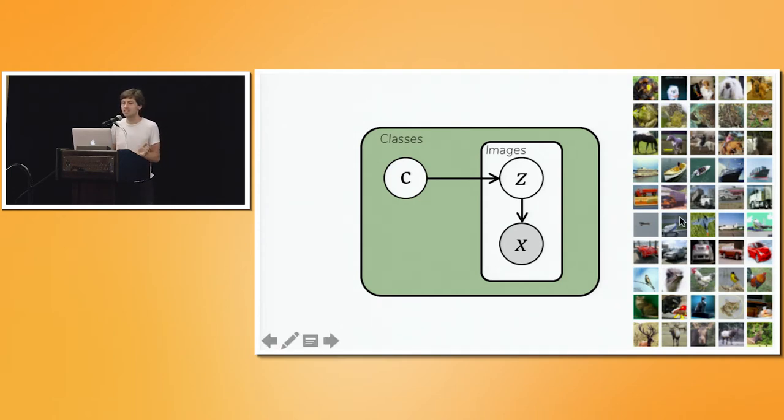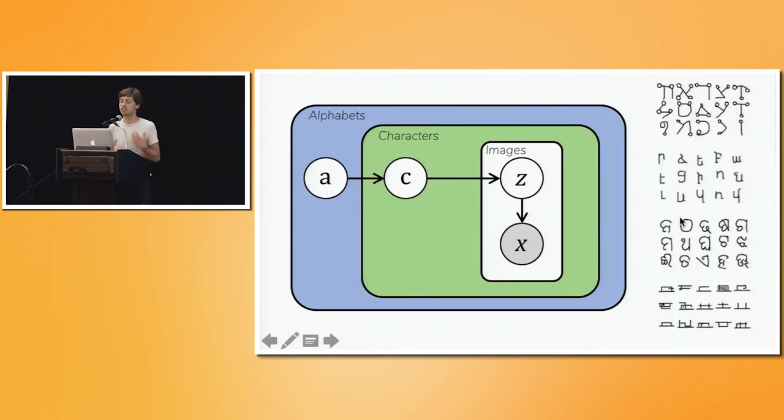Of course, there are many more. Some data sets have a nested class structure. So for example, I'm sure many of you have seen the Omniglot data set. It's a data set of handwritten characters, and it's organized into 50 alphabets where each alphabet has something like 30 characters, and each character has 20 images. So we'd like to model this kind of shared structure using a hierarchical generative model with a separate latent variable to describe the regularities in each alphabet and in each character.